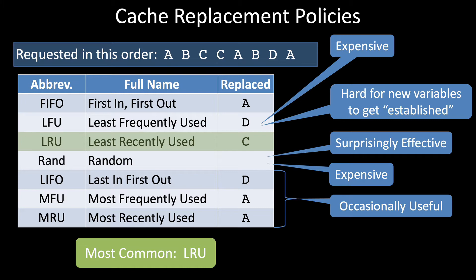LRU is the replacement policy that evicts the cache block that has gone the longest without being accessed. For example, given this sequence of accesses, LRU would evict variable C because we have to look the furthest back in our history to find the most recent access to C.